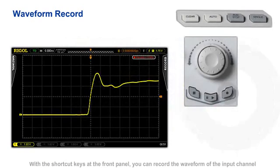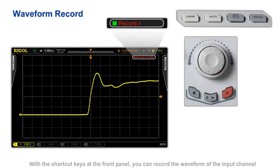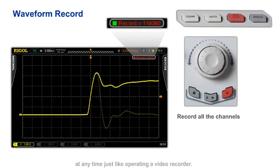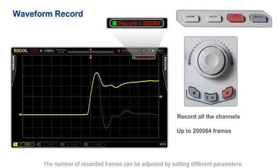With the shortcut keys located on the front panel, you can record the waveform of the input channel at any time just like operating a video recorder. The number of recorded frames can be adjusted by setting different parameters.